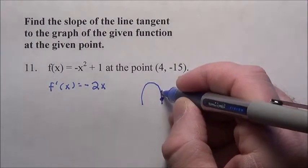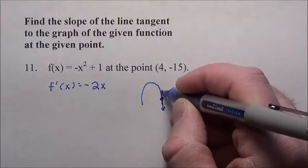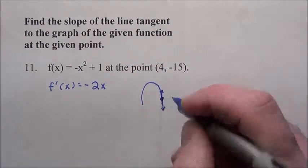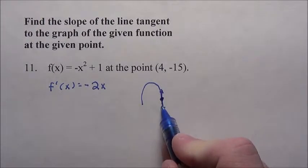we're looking for the slope of the line that's touching right at that particular point, the tangent line, which comes in and touches just that one particular point. So we're looking for the slope of this line right here.